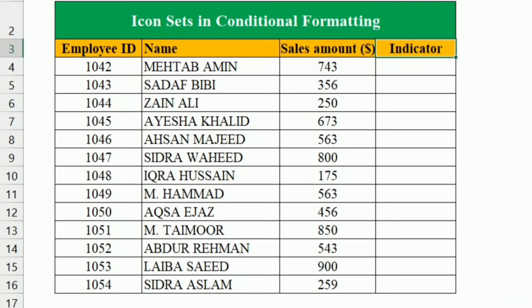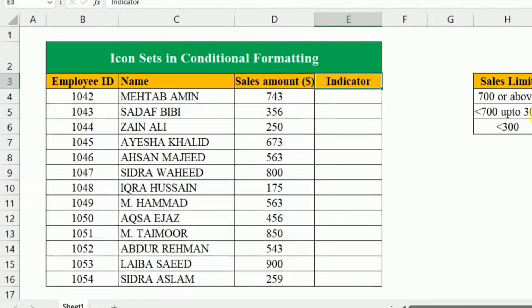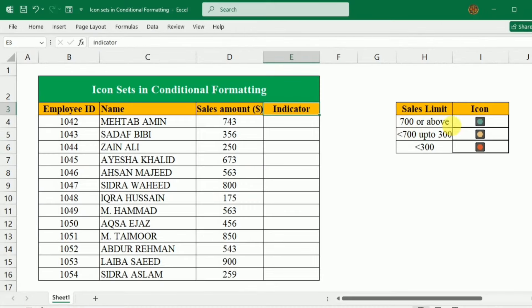So this is an exemplary sales data in which we have the employee ID, names, and the sales amount. I want to add the indicators as per the sales amount, and the sales limit that will be used to set the icons is given over here.